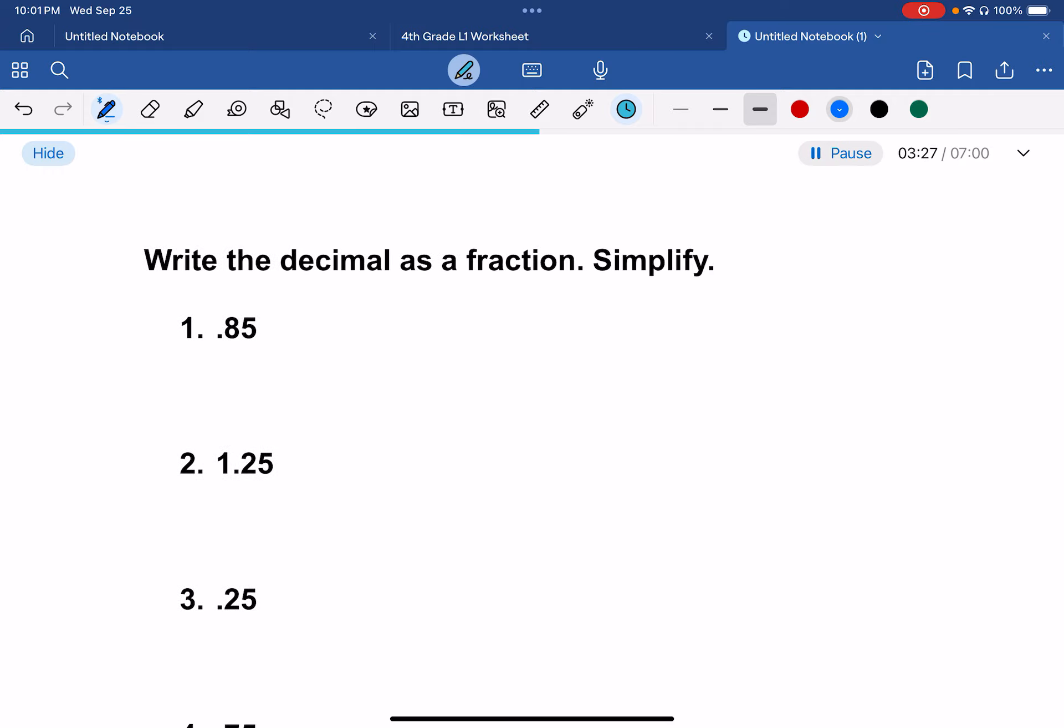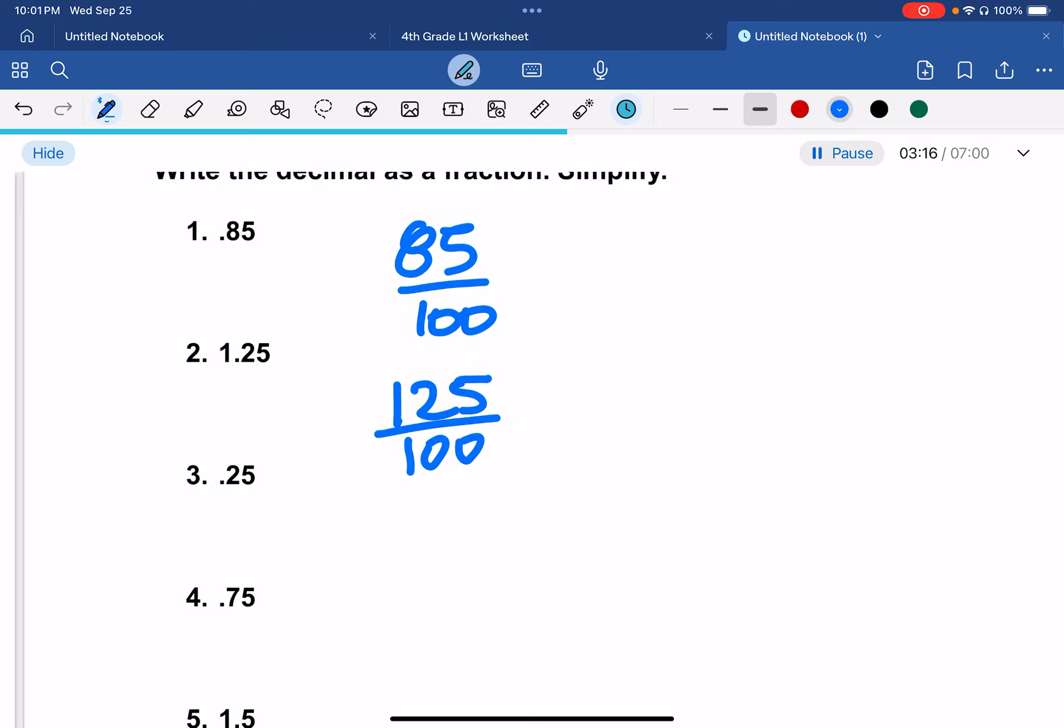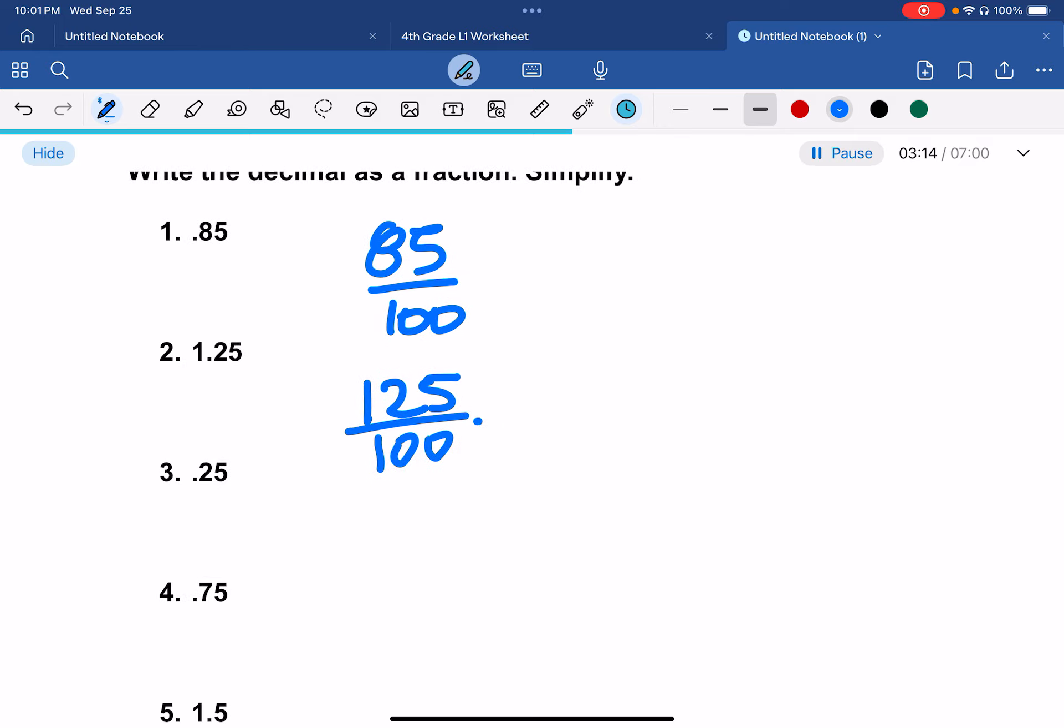Write the decimal as a fraction. Simplify. So this would be 85 out of 100. And then this would be 125 over 100. And we know that this one, we can just divide this by 5 on both sides.